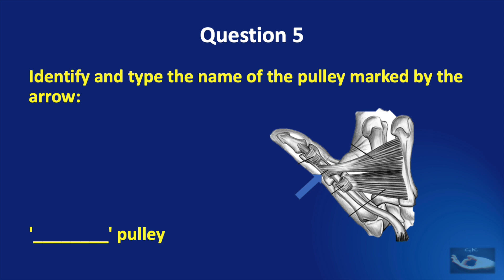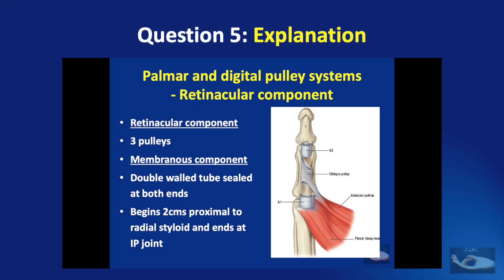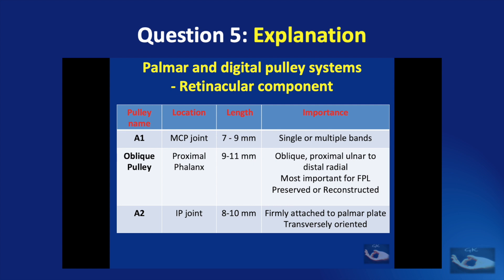Question number five: identify and type the name of the pulley marked by the arrow, dash pulley. And the answer is oblique pulley. The retinacular component consists of three pulleys: the A1 pulley, the oblique pulley, and the A2 pulley.